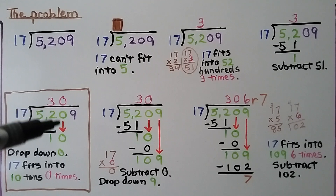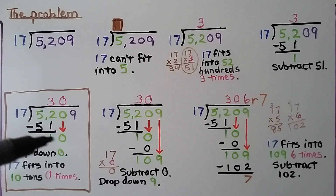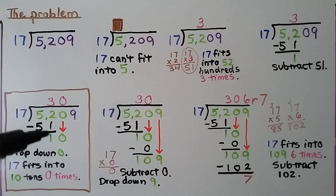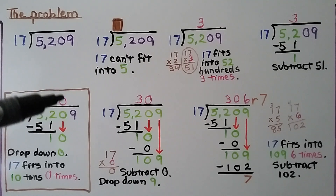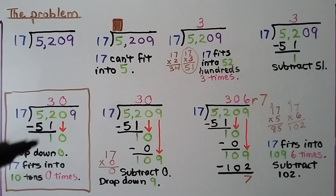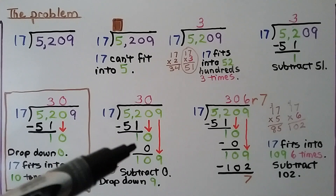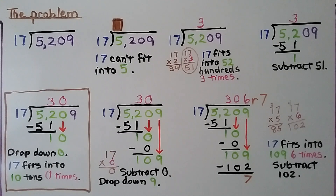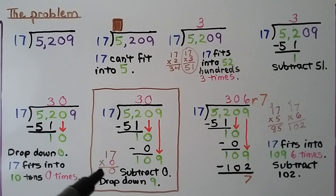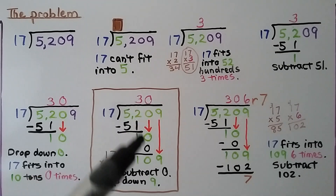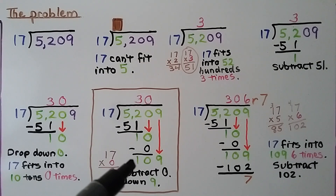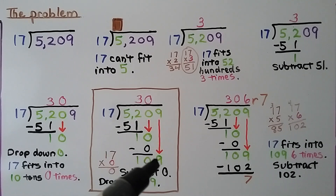We drop down the 0, giving us 10 tens. And 17 fits into 10 tens 0 times — we can't fit a 17 in there — so we put a 0 above the tens place. 17 times 0 is 0; we subtract and get 10 tens again.